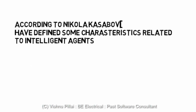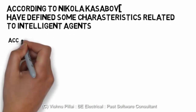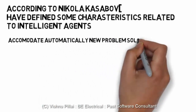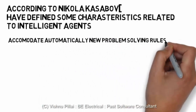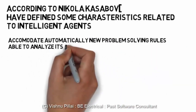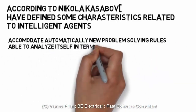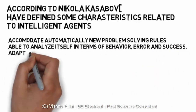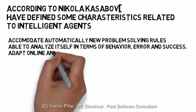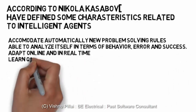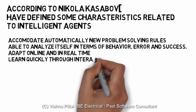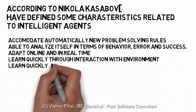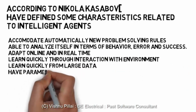These characteristics include: the intelligent agent should be able to automatically accommodate new problem-solving rules; it should be able to analyze itself in terms of behavior, error, and success, and adapt online in real time; and it should be able to learn quickly through interaction with the environment, meaning it can also be self-learning.